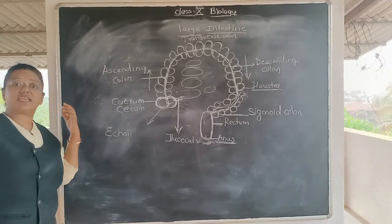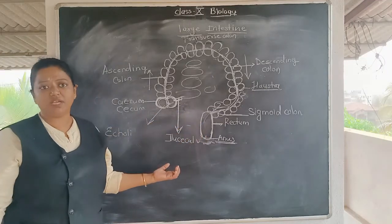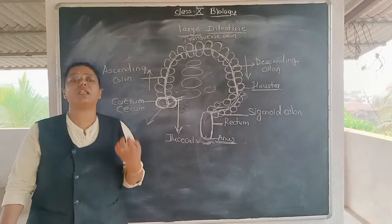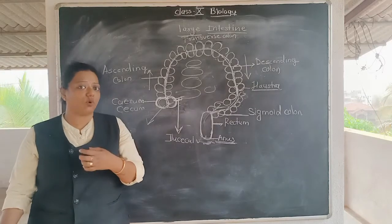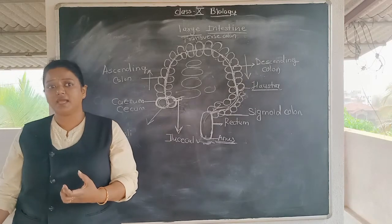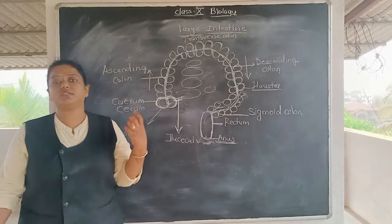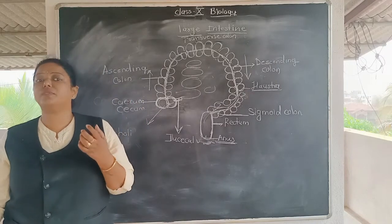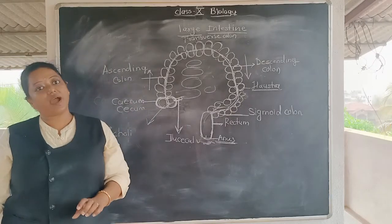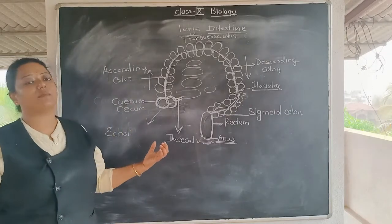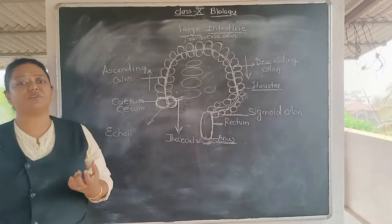As the E. coli bacteria use our waste material as their food, the bulk of the waste material is reduced. Our waste material before was 1.5 to 2 kg, but now it is reduced to only 150 grams. Throughout the day, we pass fecal matter of only 150 grams, not more — because E. coli bacteria have utilized the available nutrition.